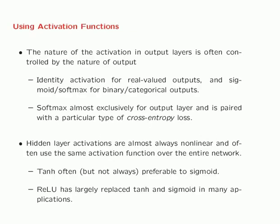Let's discuss the use of activation functions in more detail — specifically how they are chosen for the output layer versus the hidden layer. The nature of the activation function in output layers is controlled by the nature of the output. For real-valued unbounded output, such as numerical regression, you typically use identity activation. For binary or categorical outputs you typically use the sigmoid or the softmax. The softmax is almost exclusively used for the output layer and is typically paired with a cross-entropy loss, which we will revisit in later lectures.